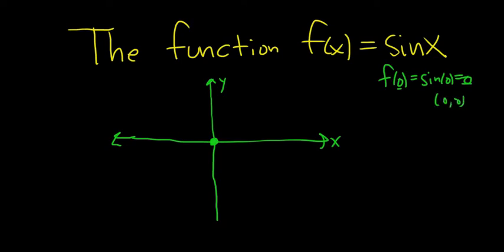The sine of π/2 is 1. So if you do f(π/2), you get the sine of π/2, which equals 1. So you get the point (π/2, 1). At π/2 here, you get 1.